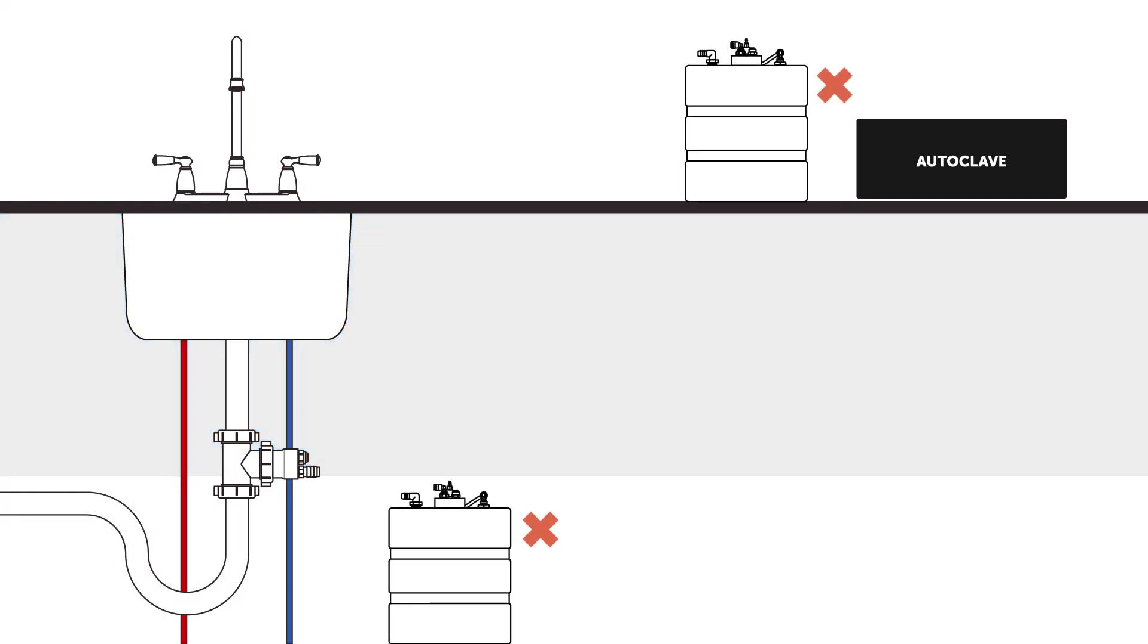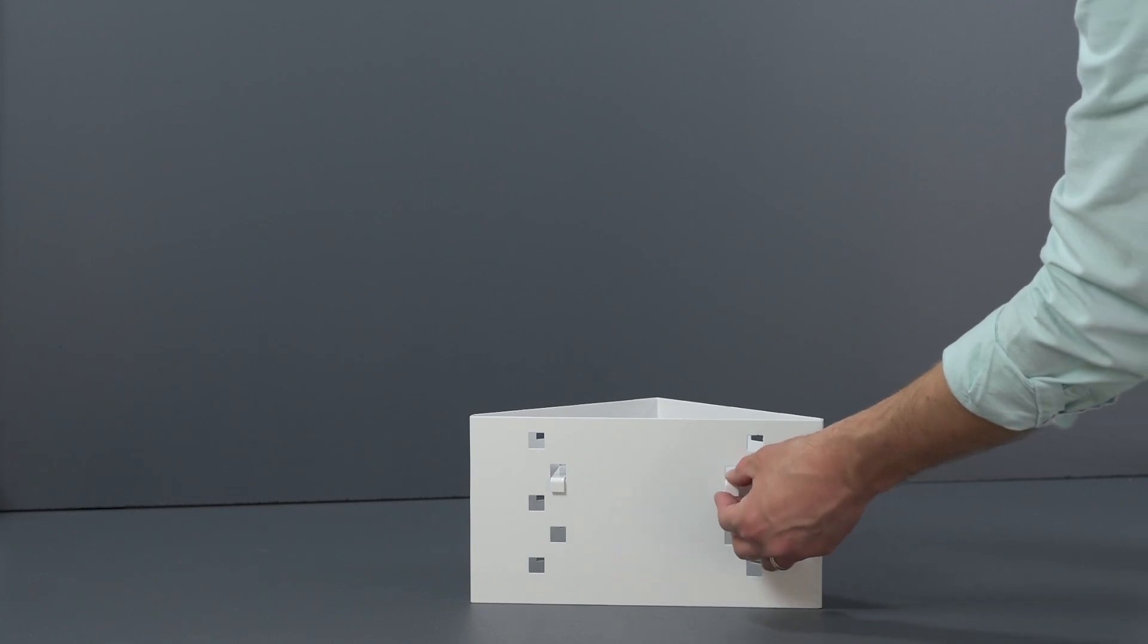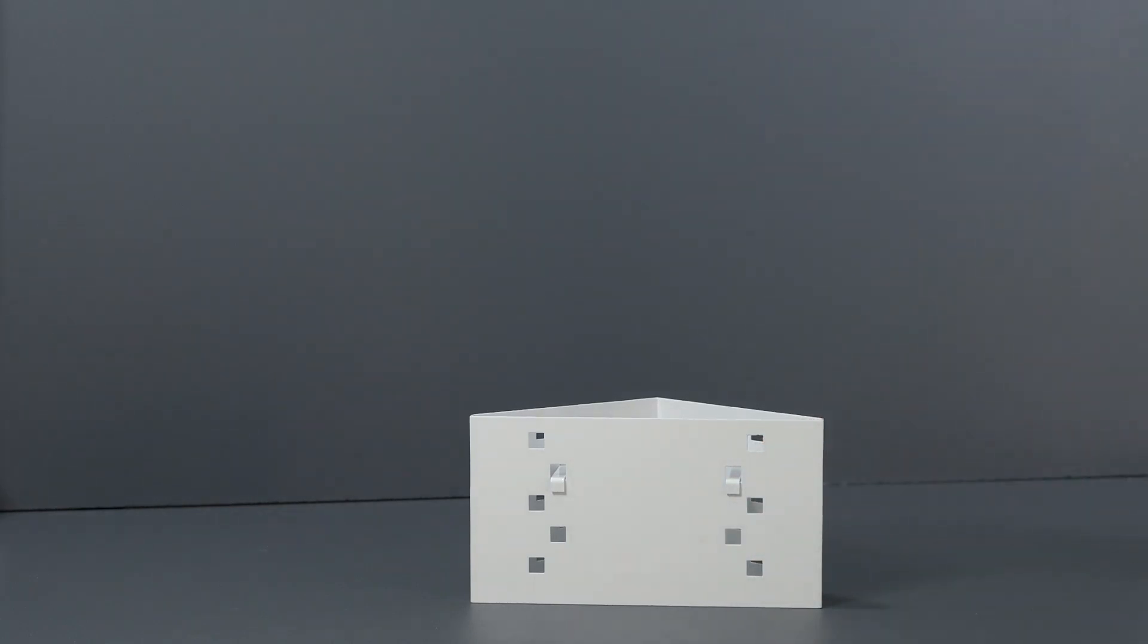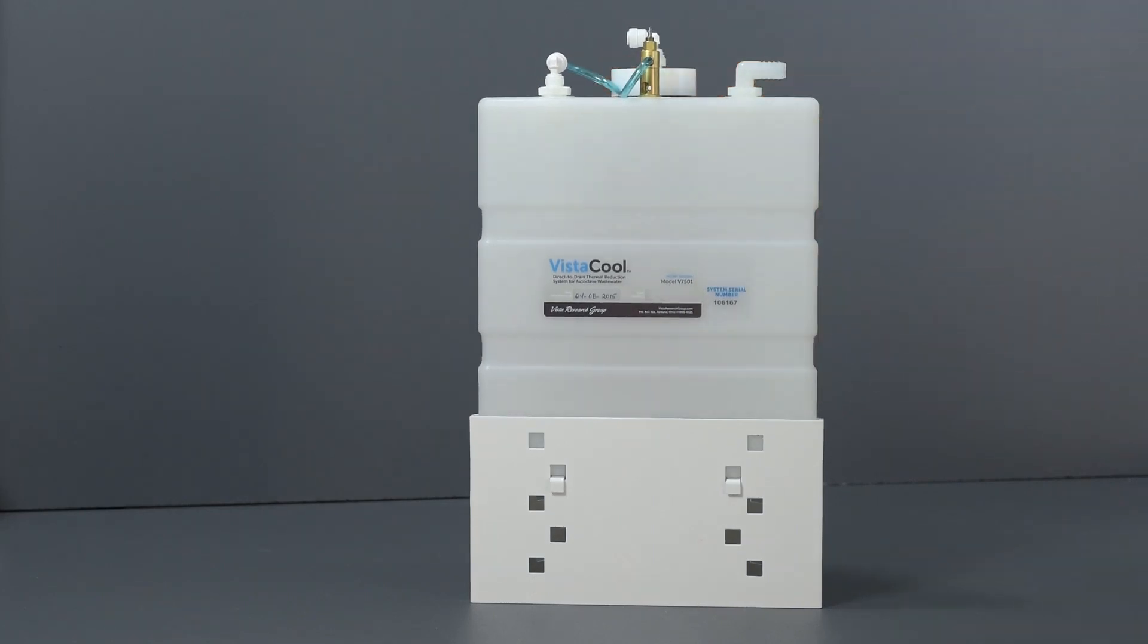Installing a tank at the wrong height may create resistance for proper water flow since the system is designed to take advantage of gravity flow. Adjustable tank stands for installing the VistaCool at the correct height are available as accessories when needed. These stands raise the tank height between half to 5 inches in half inch increments.